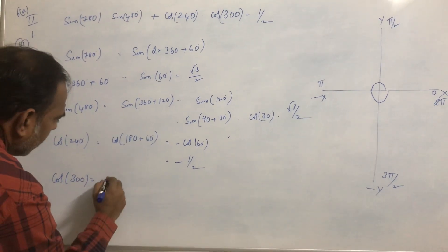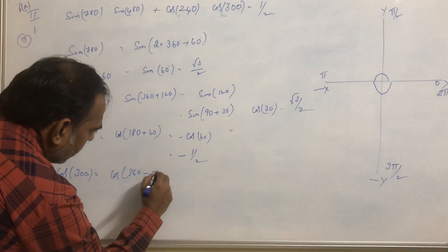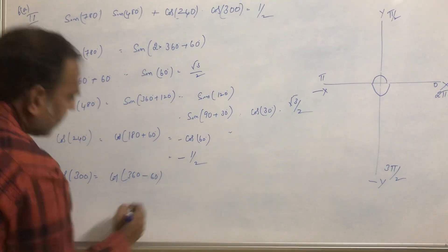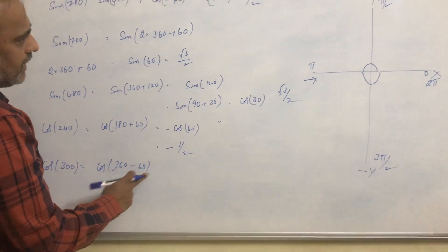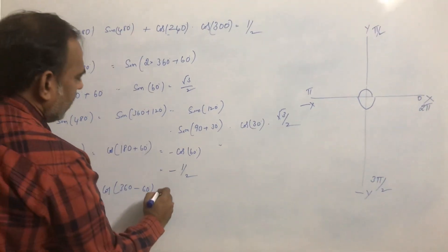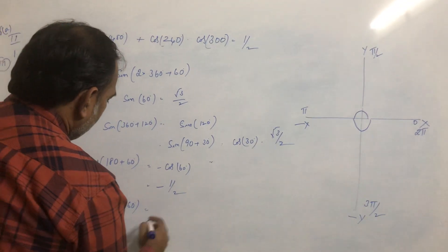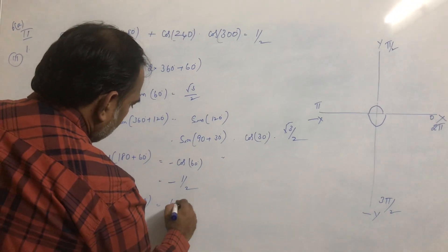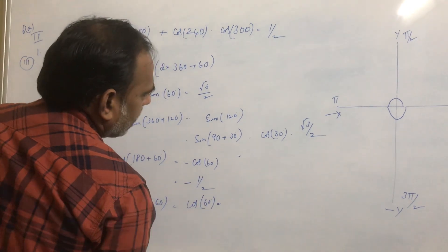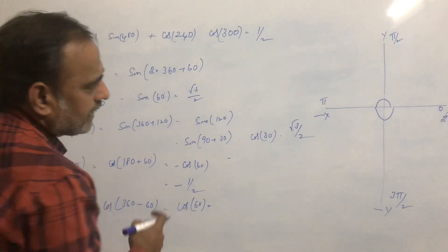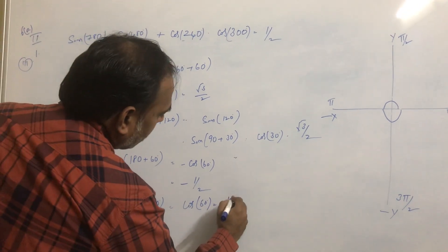Now take cos300. cos300 can be written as cos(360 − 60) = cos60°. This is in the fourth quadrant, where cosine is positive. So the final value is cos60° = 1/2.